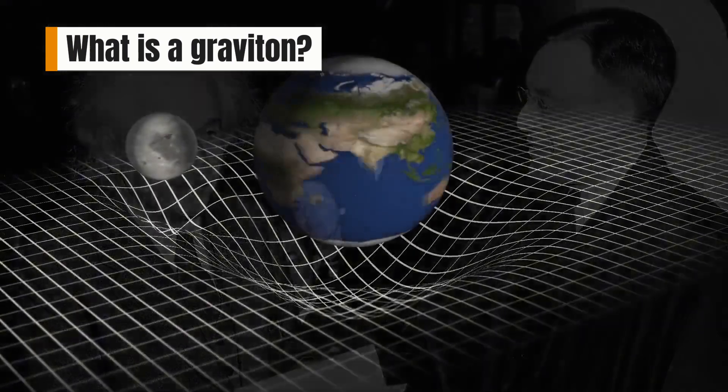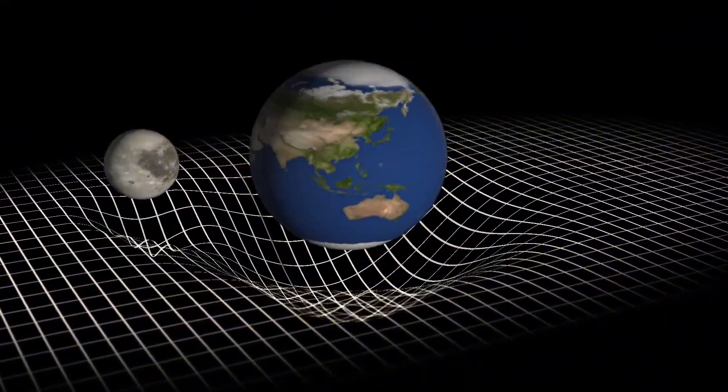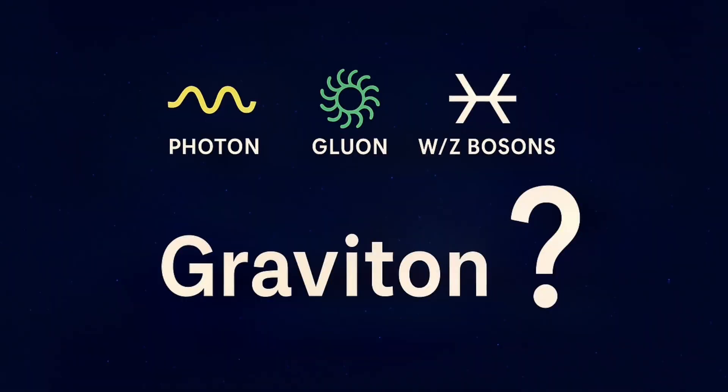Einstein's theory of relativity describes gravity as the curvature of space-time, not as a force. But quantum physics says that every force should have its own carrier particle.